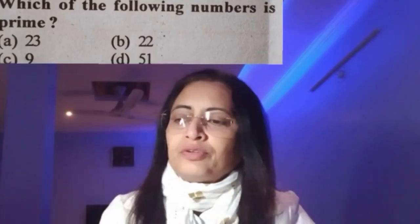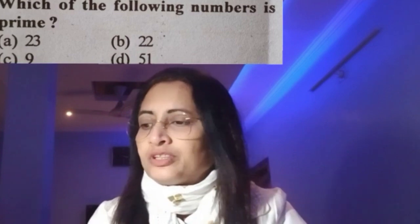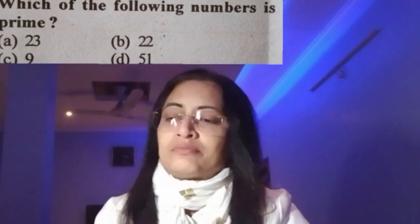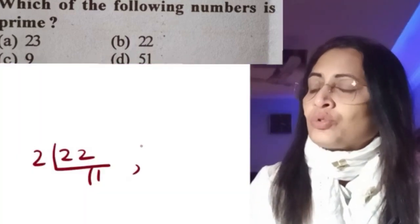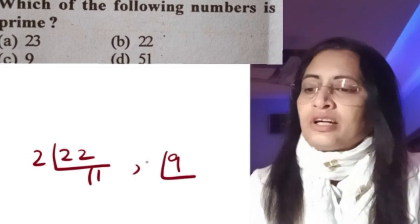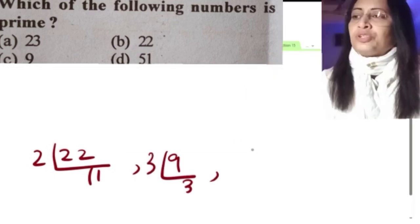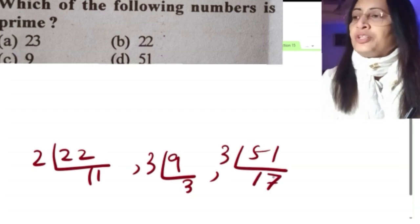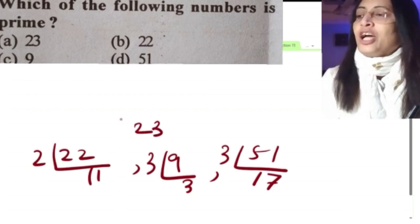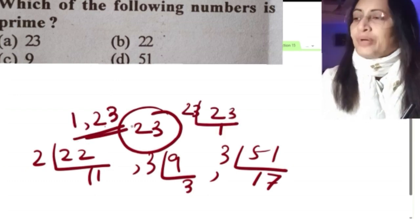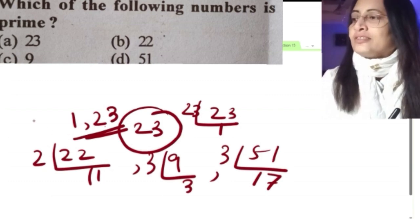Question: which of the following numbers is prime? Four options are given: 23, 22, 9, and 51. Prime numbers are numbers whose factors are one and the number itself. 22 can be divided evenly, 9 can be divided by 3, and 51 can also be divided by 3. But 23 cannot be divided by anything apart from 1 and itself, so 23 is the prime number — option A.